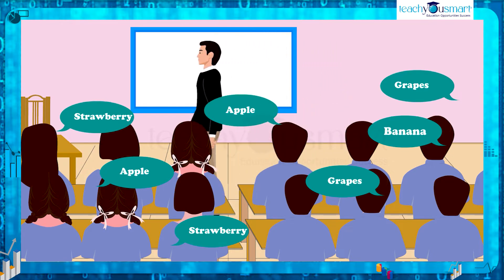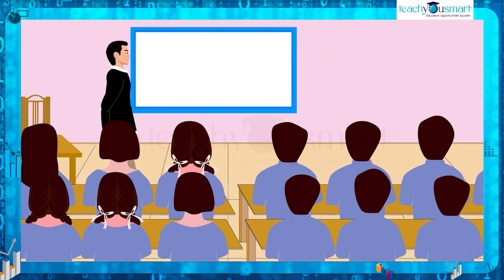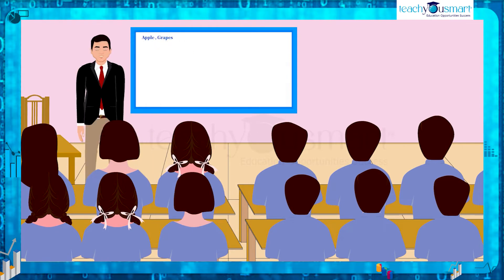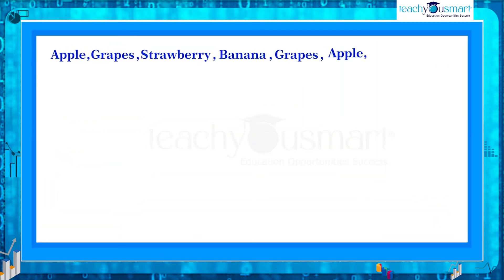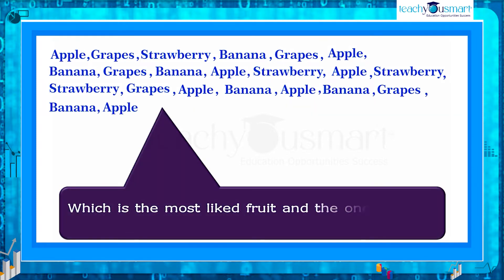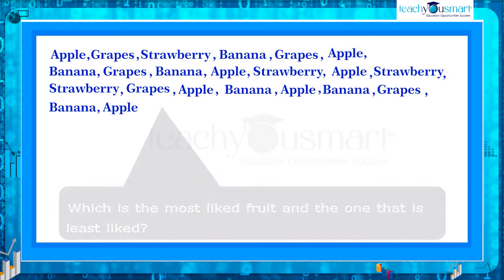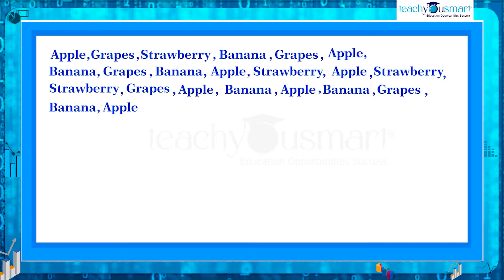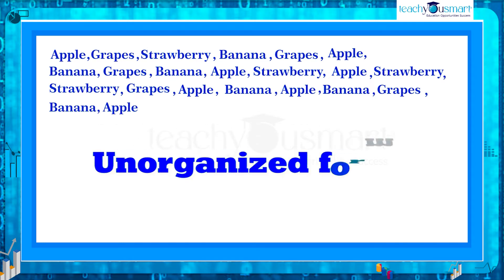The results were listed. From this, can you say which is the most liked fruit and the one that is least liked? It is not easy to say the answer by looking at the choices written disorderly. That is, the given data is in an unorganized form, which is called raw data.